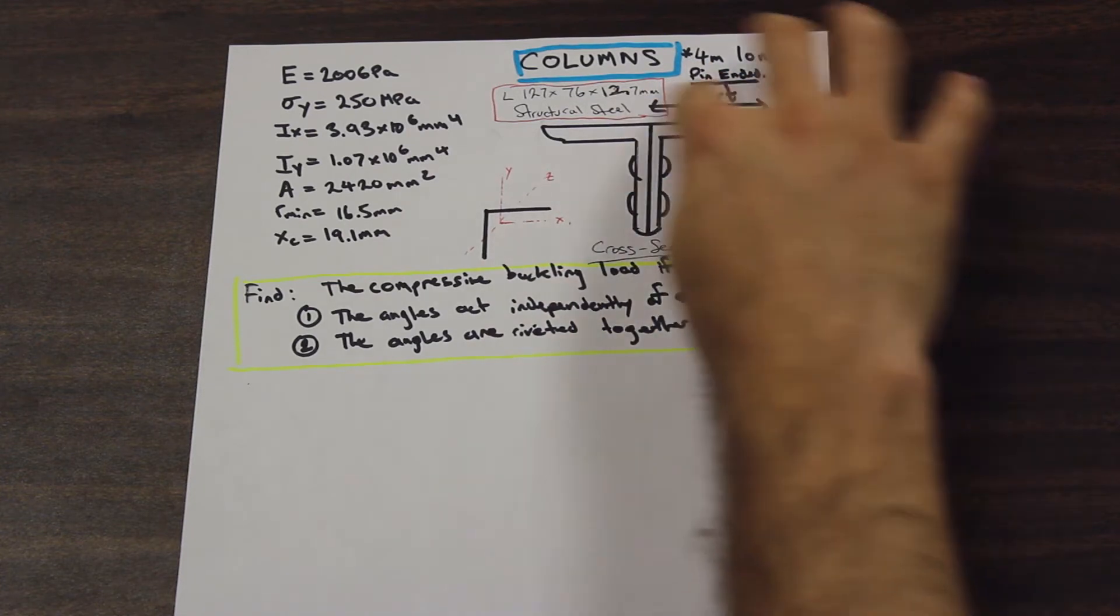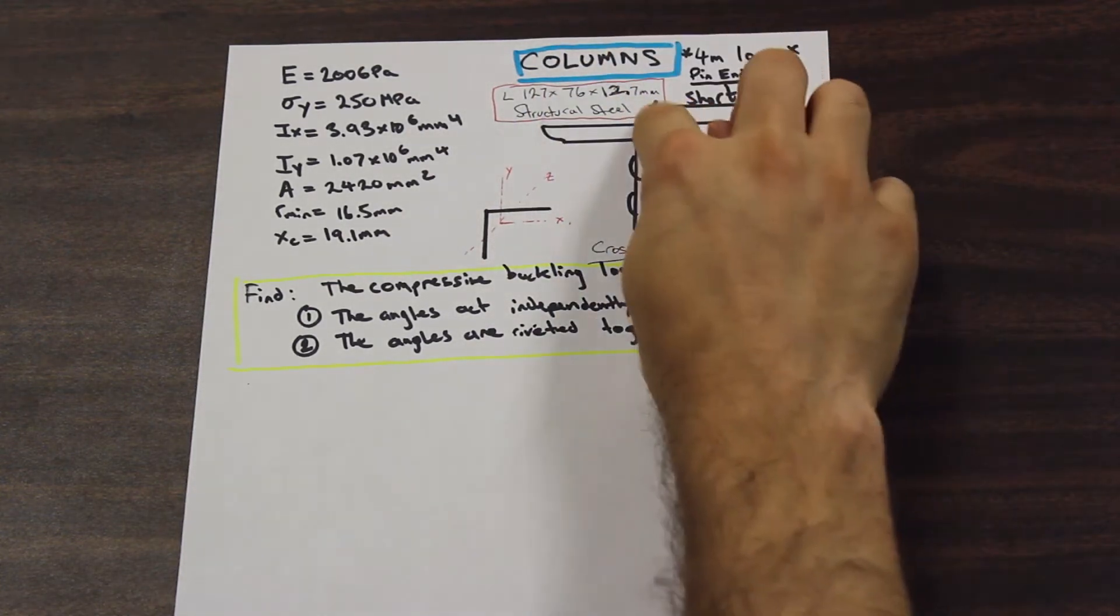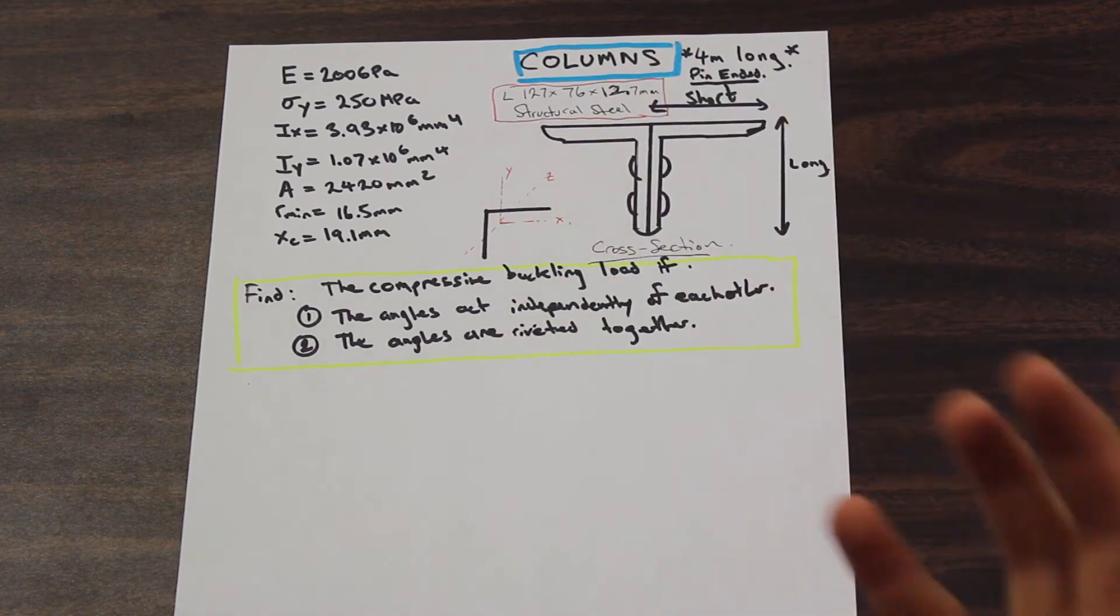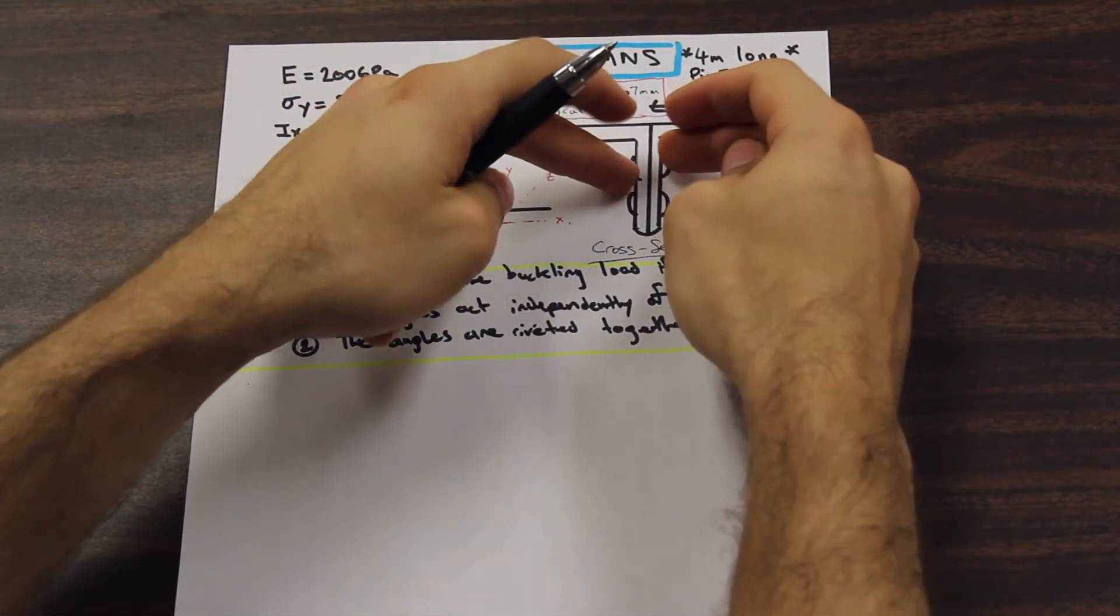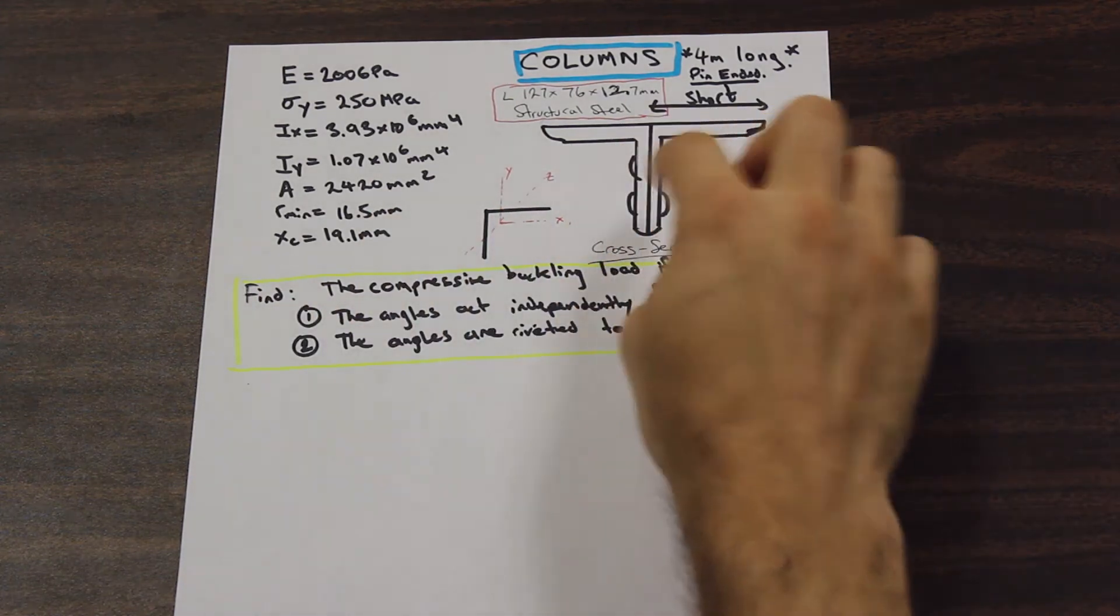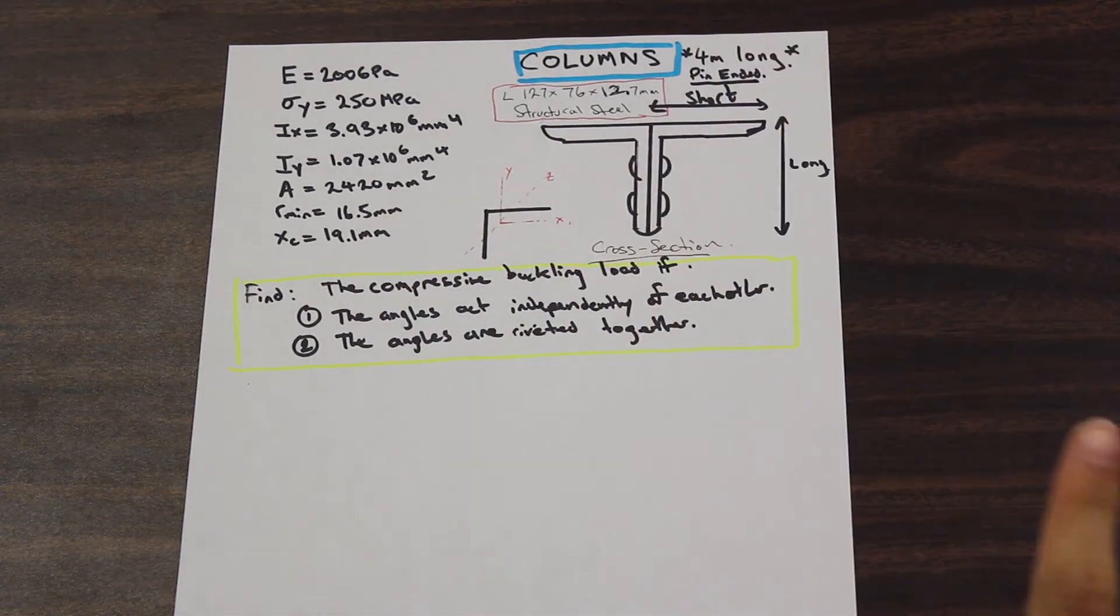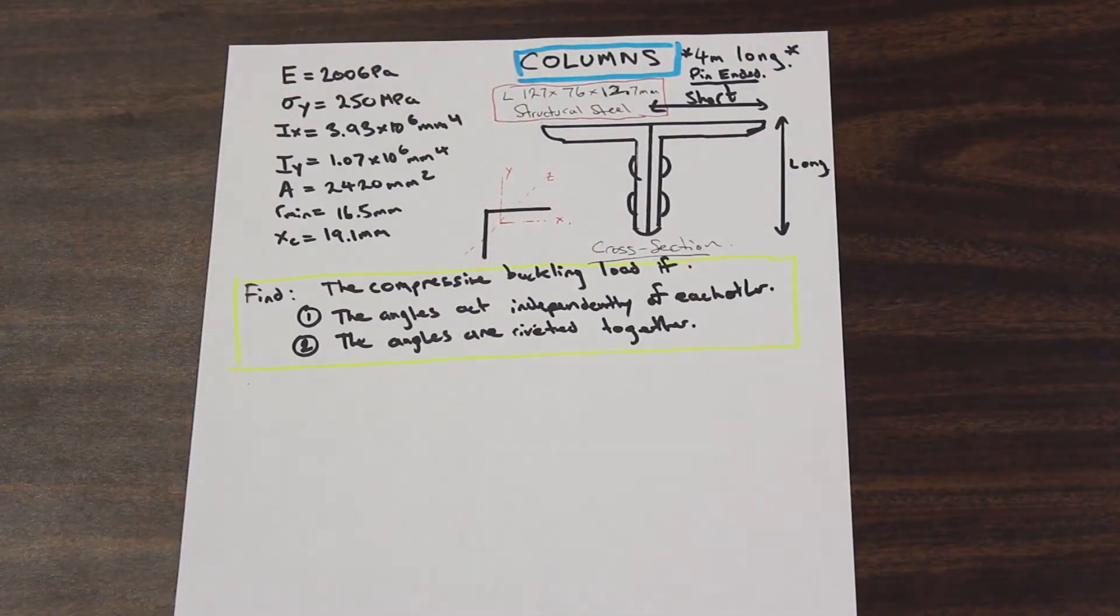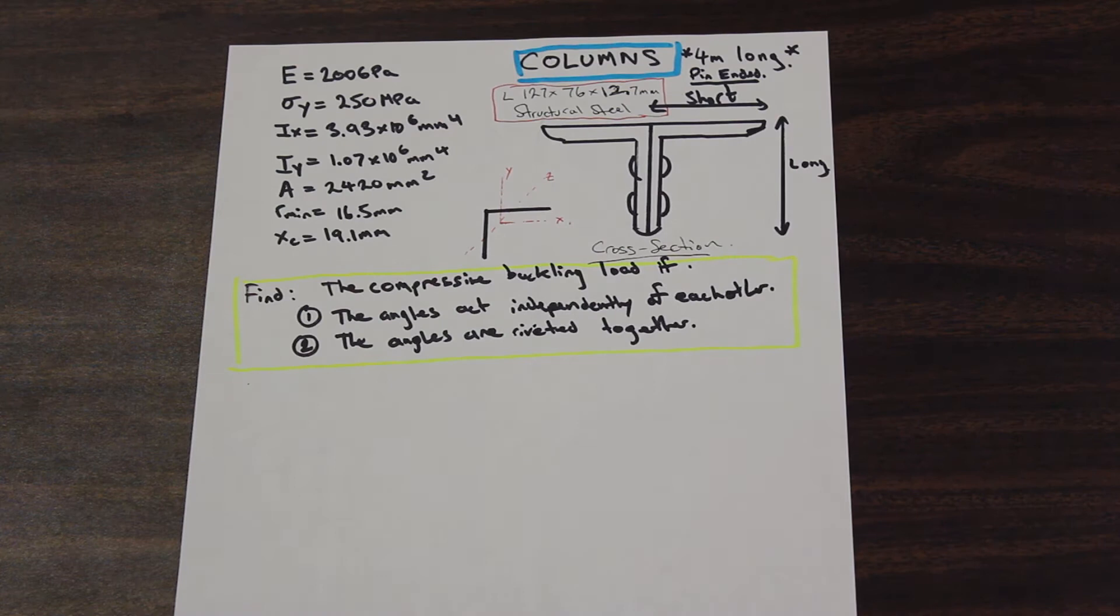And so what we have here, a picture here, we have a cross section, and we have two, what's called an angle. That's a little L-shaped beam there. We have two angles, and as you can see, they've been bolted together, and in the first part of the question, actually we're going to assume that they're not bolted, that they're just acting independently. And then in the second part of the question, we're going to assume that it just forms a singular beam, and we have to approach both of those a little bit differently.